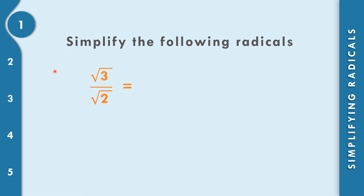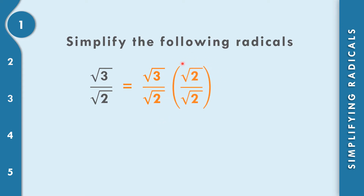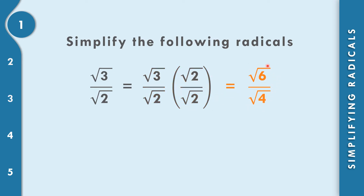In example number 1, let us simplify square root of 3 all over square root of 2. Multiply the numerator and denominator by square root of 2 — that is the denominator. Multiply outside, then multiply inside the radical sign. Square root of 3 times square root of 2 is square root of 6. Square root of 2 times square root of 2 is square root of 4, which equals 2. So the final answer is square root of 6 over 2.